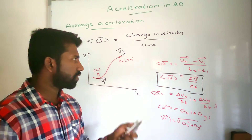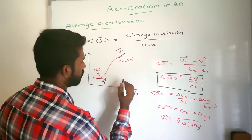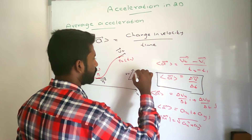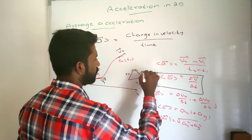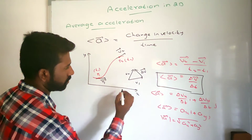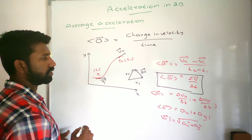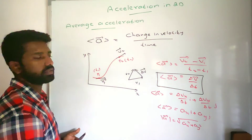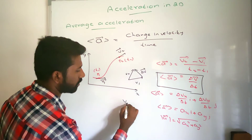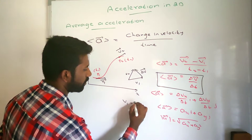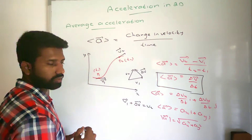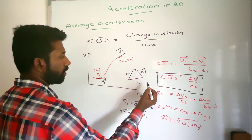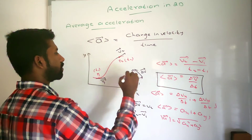To find the change in velocity direction, consider the V1 vector and V2 vector. Based on the triangular law of vector addition, two vectors are placed as adjacent sides of a triangle in the same order, and the third side is the resultant. So V1 plus delta V equals V2, meaning delta V equals V2 minus V1. Therefore delta V, and hence the average acceleration, points in this direction.